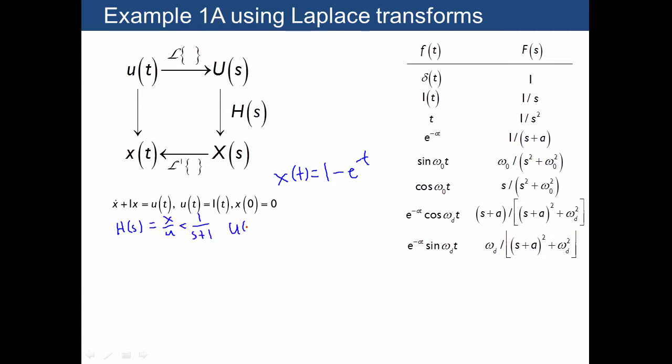And then we also need u of s, where the unit step function from this table of Laplace transforms is 1 over s. So we can find x of s just by multiplying the two together, so we get s plus 1 times 1 over s. And then ultimately we need to break this into something that we can find in the tables, and that's most convenient if we actually turn this into two separate functions that are actually added together.